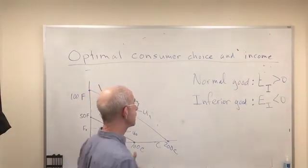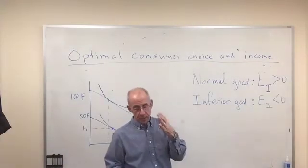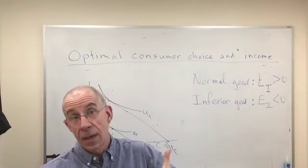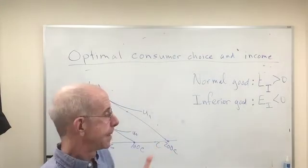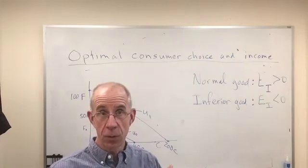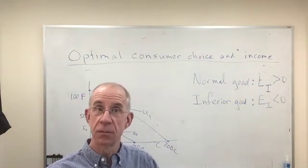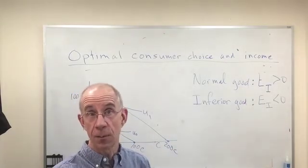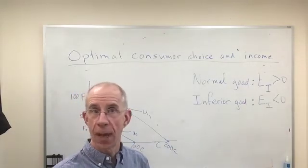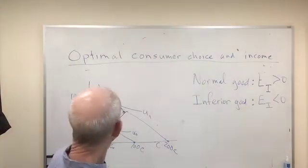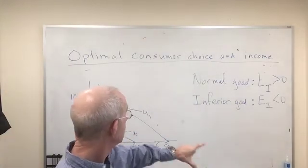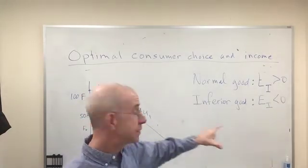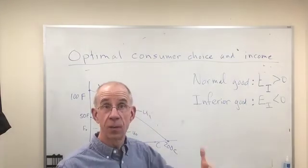Now if we were talking about this in a demand curve context, what you would be talking about is what happens to demand for a good if income changes and prices remain the same. If it's an inferior good and income goes up you actually consume less. In any event, this is where we start to evaluate how income changes the optimal choice of consumption.